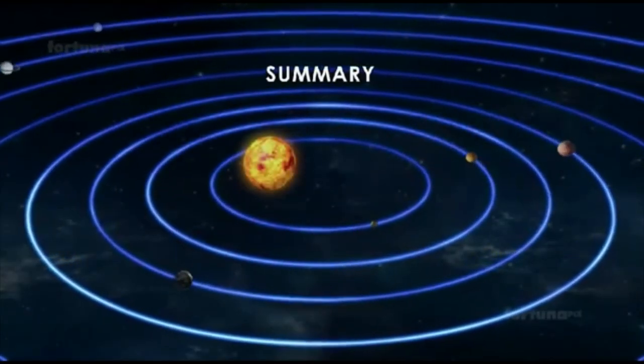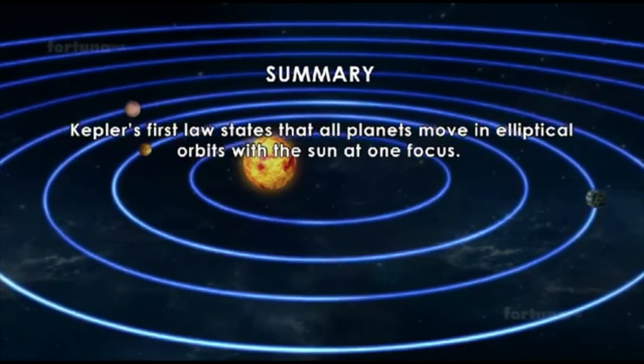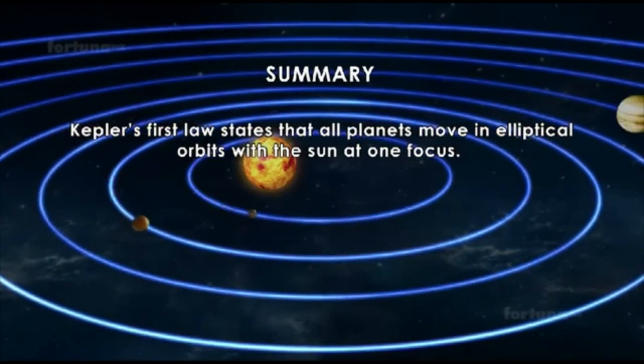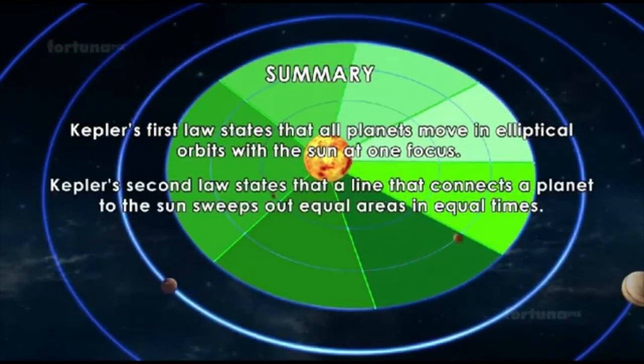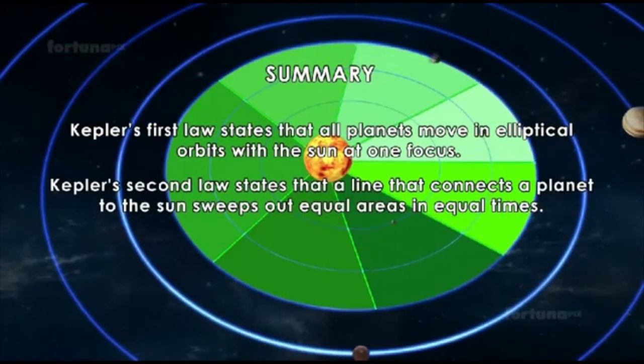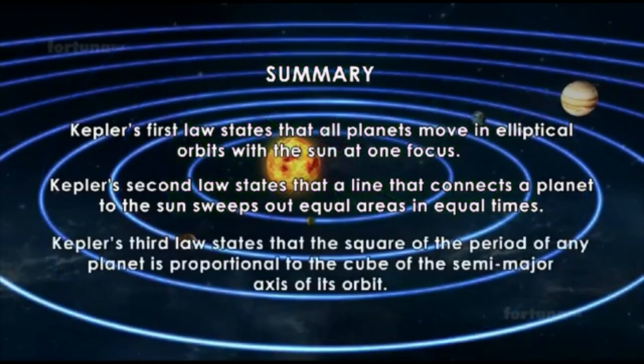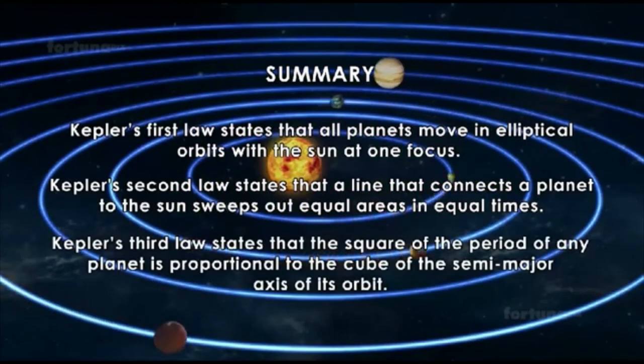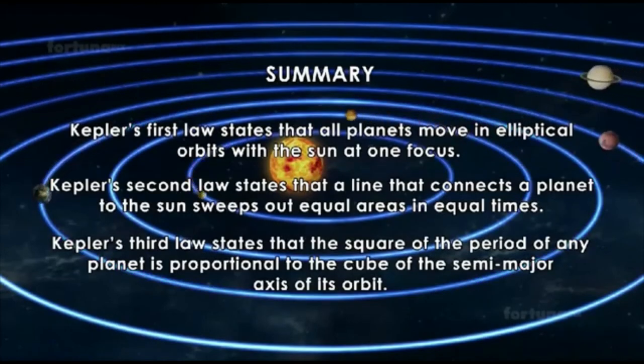Summary: Kepler's first law states that all planets move in elliptical orbits with the Sun at one focus. Kepler's second law states that a line connecting a planet to the Sun sweeps out equal areas in equal times. Kepler's third law states that the square of the period of any planet is proportional to the cube of the semi-major axis of its orbit.